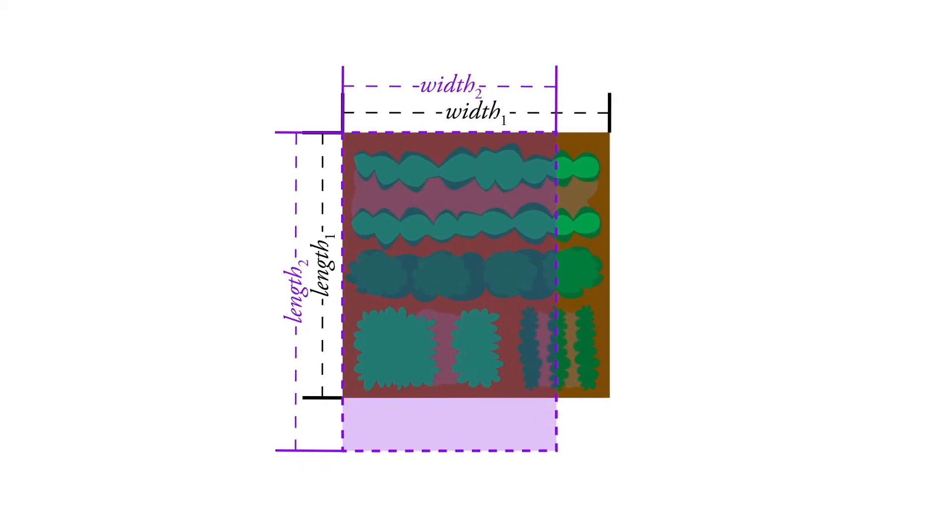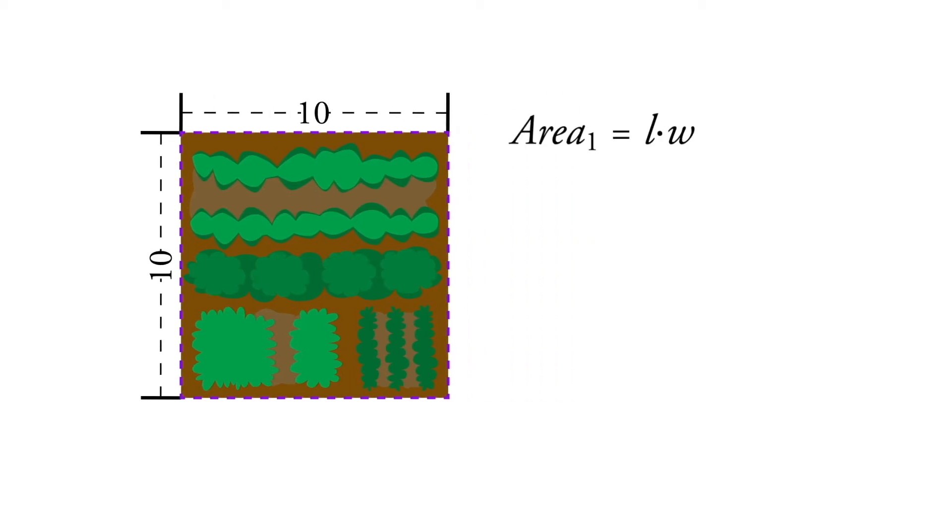And there's a couple different ways to do this. One way we can do it is just by taking numbers. So we can just say, let's just say that our garden is 10 by 10. That makes a nice simple 100. So the area is length times width. So the area is 100 square units.